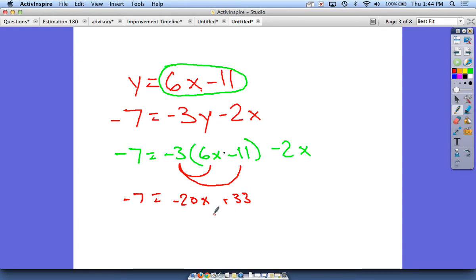Now, if we're solving for x, we want to keep x by itself on a side. So I'll just get this 33 over on the other side. I will subtract 33 to get rid of that, and I have to also do the same thing to the other side. So that's going to be negative 40.